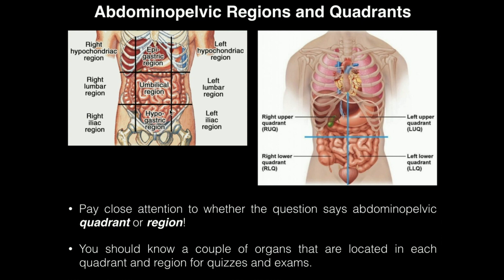Most importantly, make sure you can identify each of the nine regions and each of the four quadrants, because typical quiz and exam questions might have an arrow pointed to one of these and ask you which one it is — for example, 'this is the umbilical region' or 'this is the right upper quadrant.' You'll have activities covering some of these in class today.